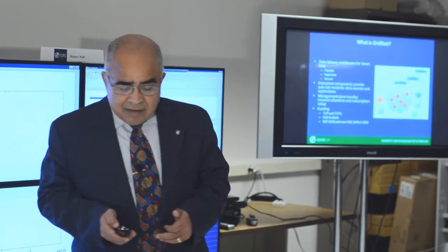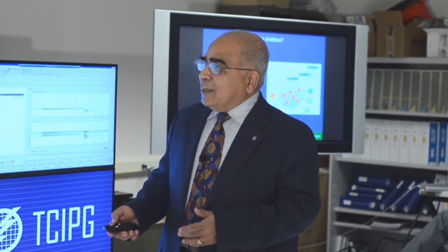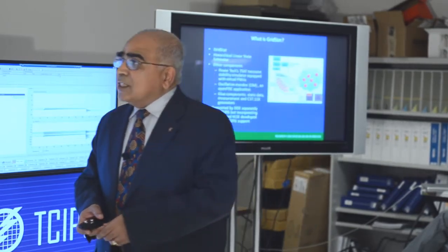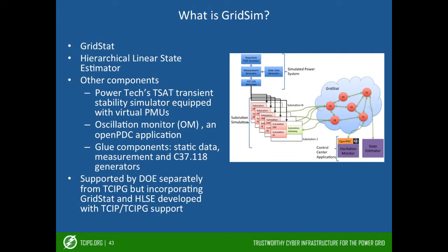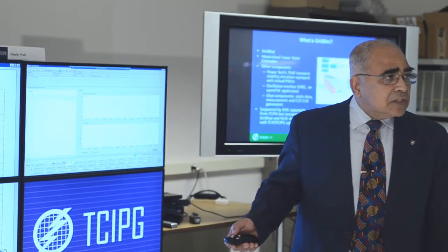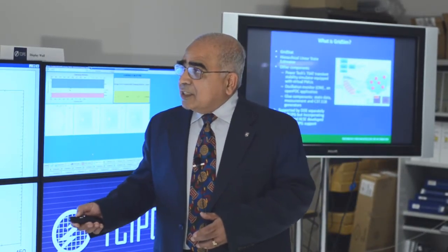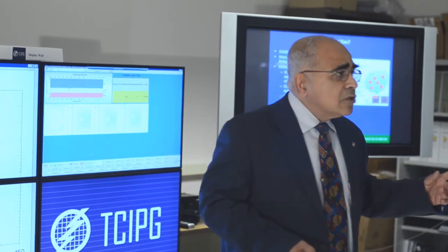This is demonstrated as part of GridSim because it is generally difficult to demonstrate the movement of data through a communication system. Instead, we have a process of producing real-time data from a power grid simulator. That PMU data is distributed to all the substations, which then publish the data, which is picked up by GRIDSTAT and delivered to two different applications.